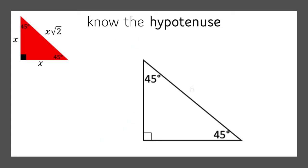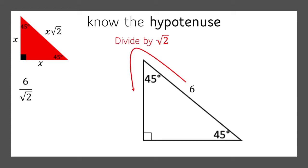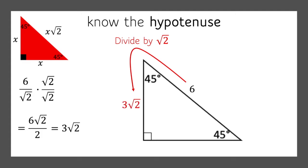Let's try a more complicated one. What if the hypotenuse is 6? Well, we divide by square root 2 — same thing. But let's do a little bit of math: 6 divided by the square root of 2. We can't have a root on the bottom of the fraction, so we're going to have to rationalize the denominator. We multiply the top and the bottom by the square root of 2, which gives us 6√2 over 2, which reduces to 3 times the square root of 2. So that's one leg, and we automatically know the other leg is also 3 times the square root of 2.